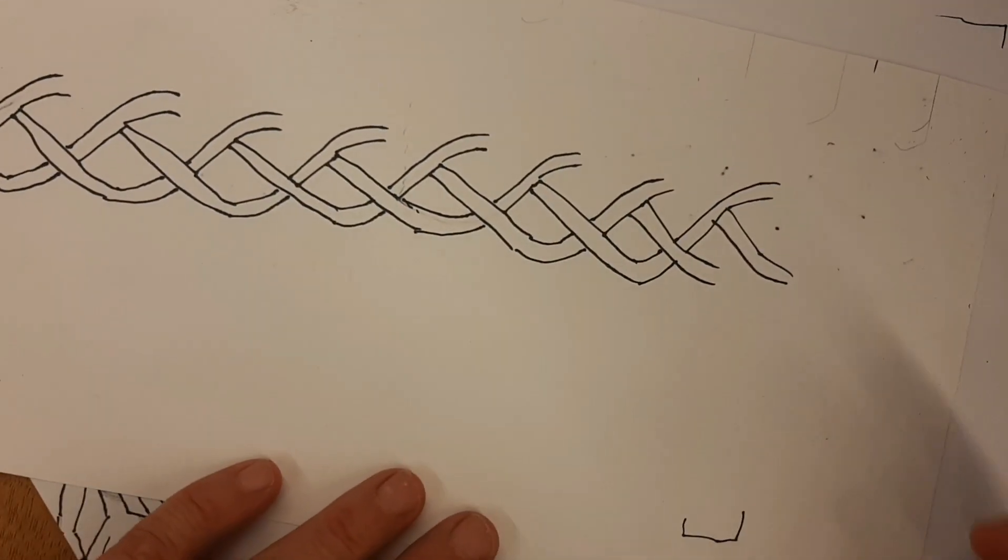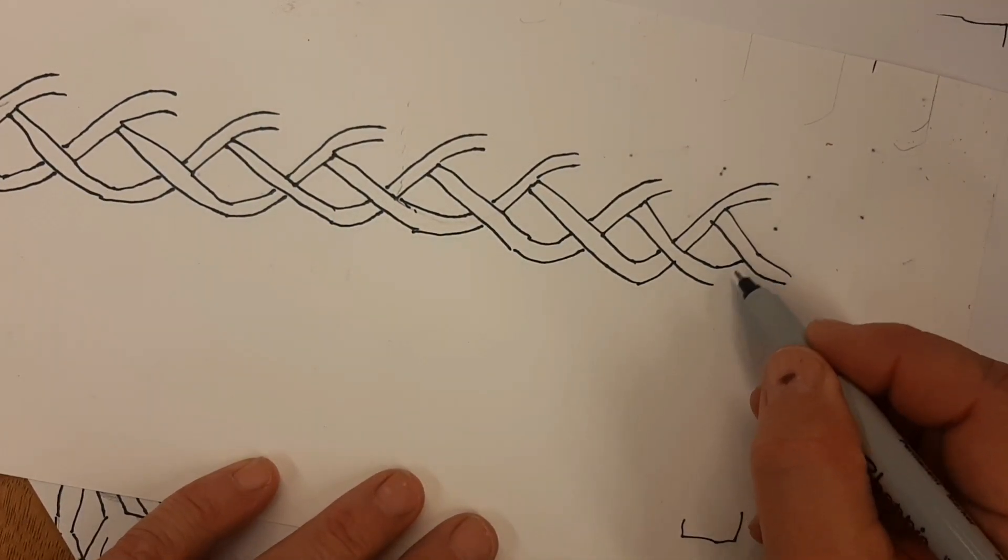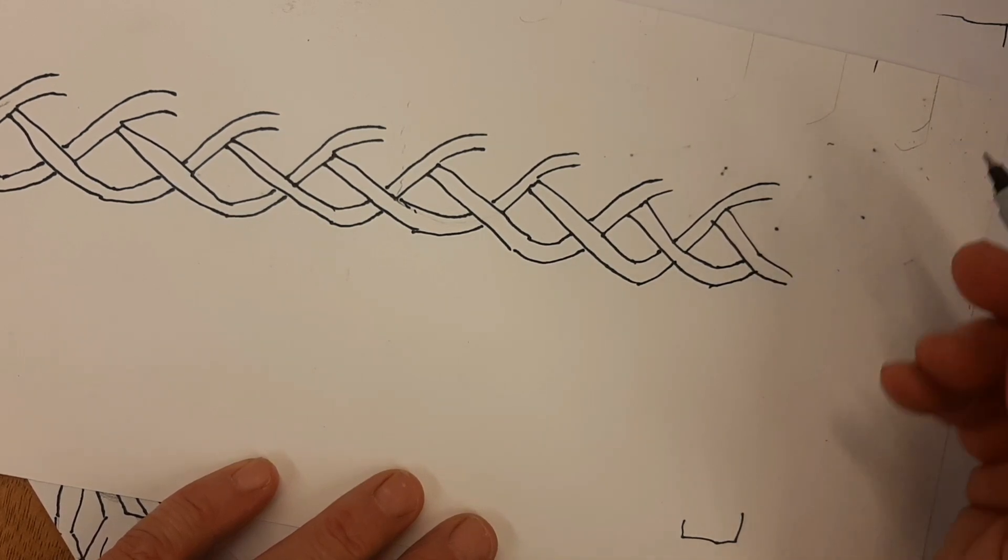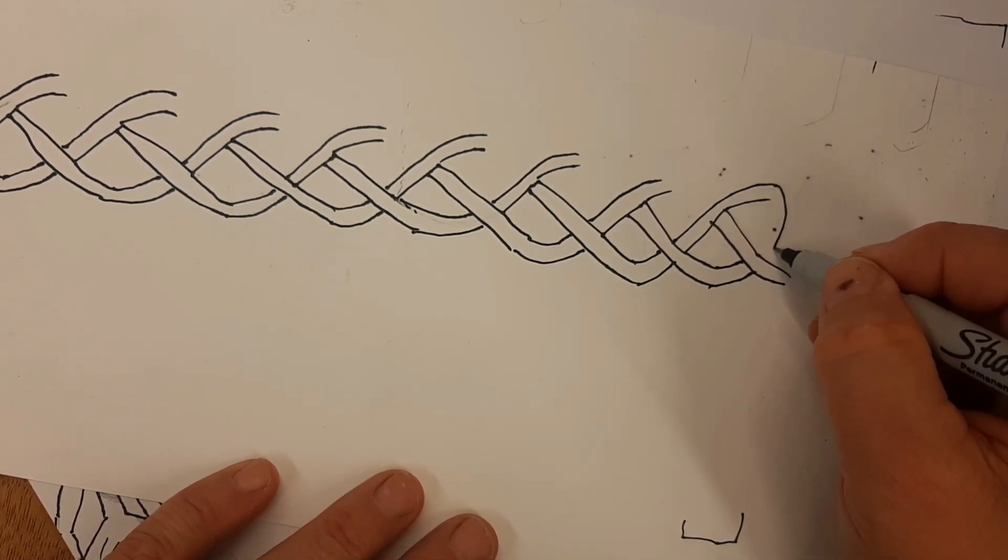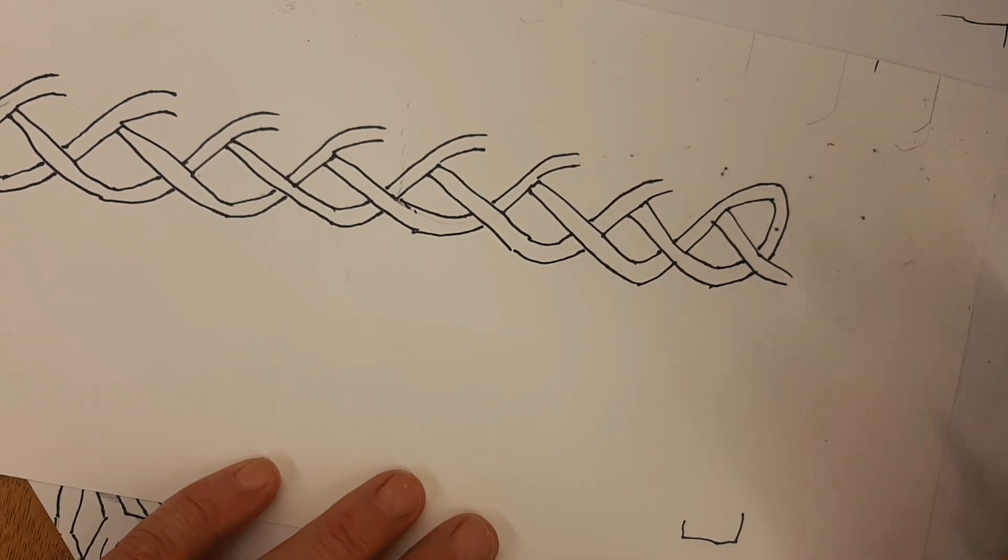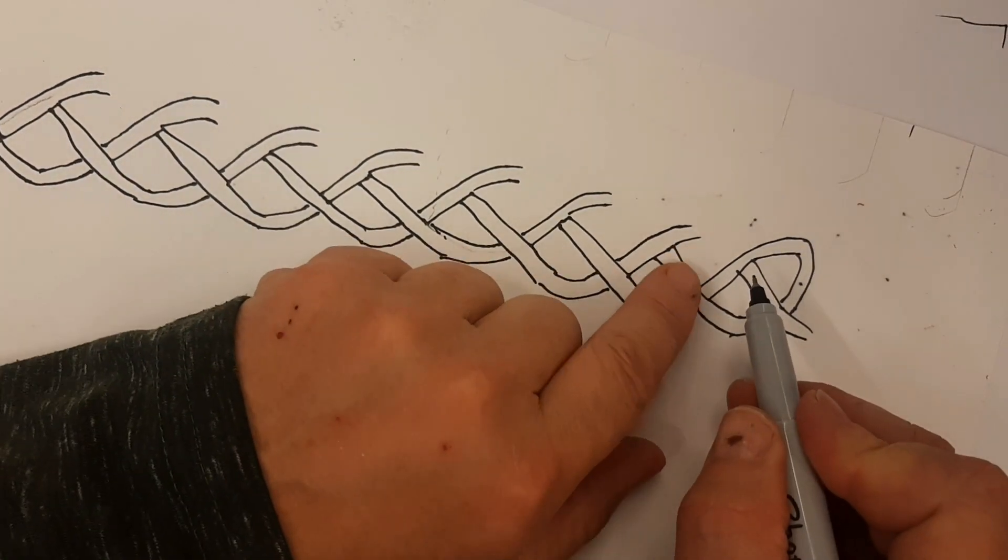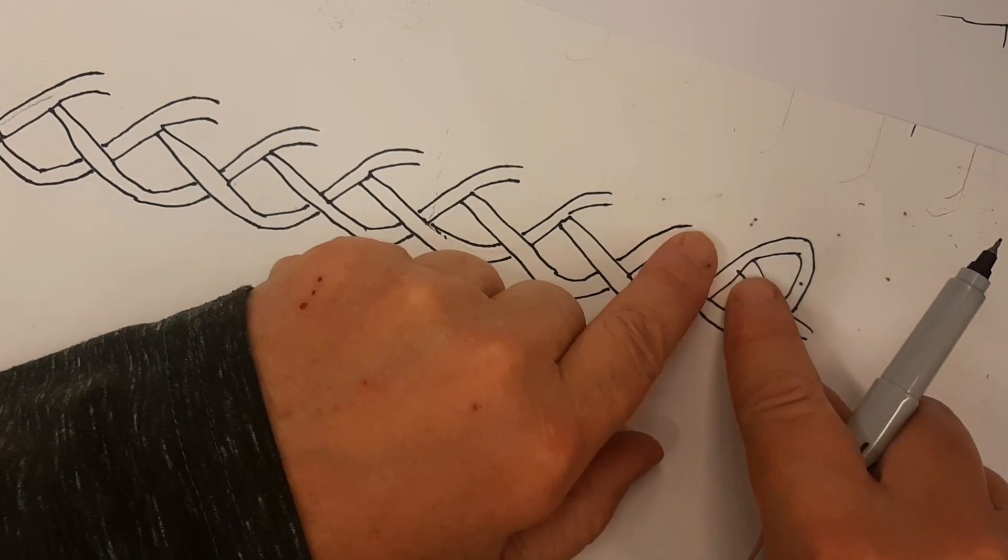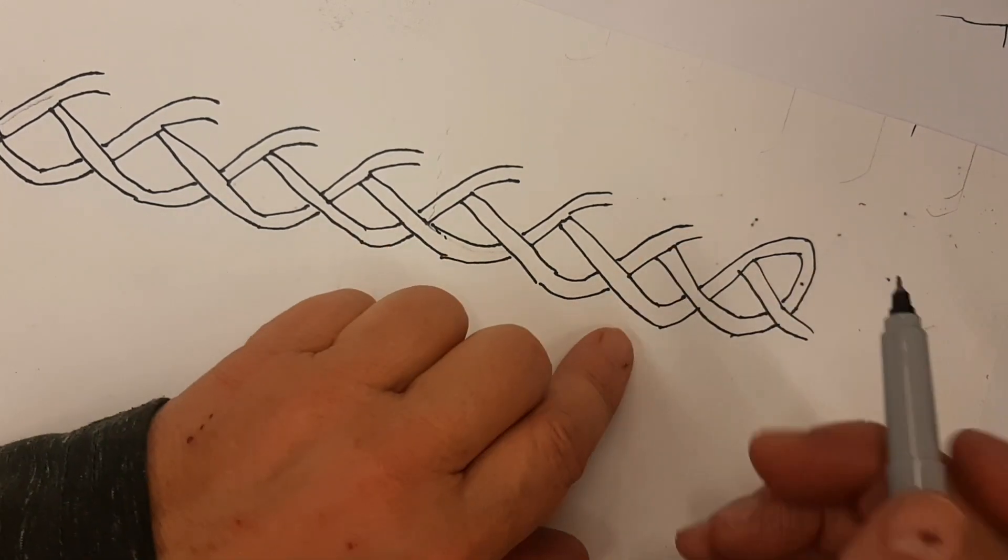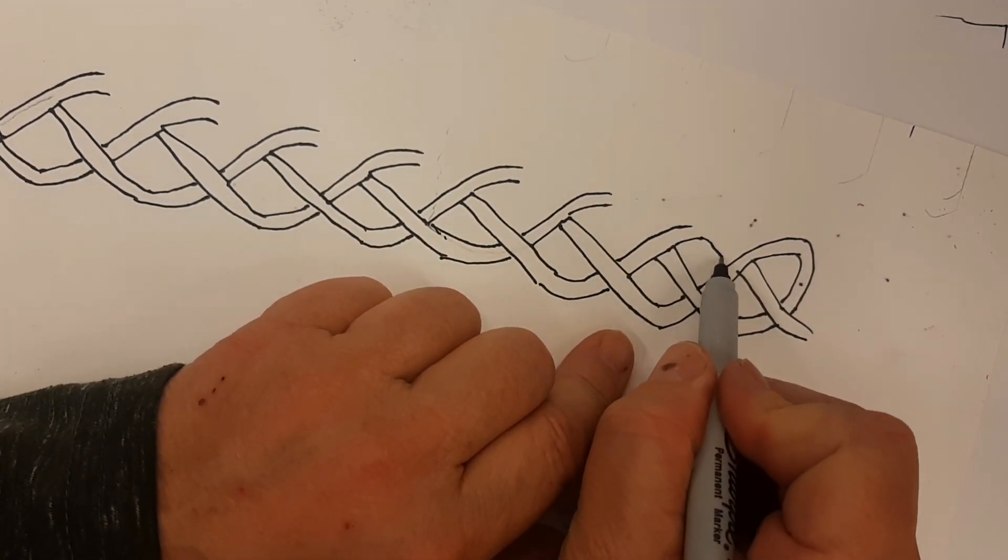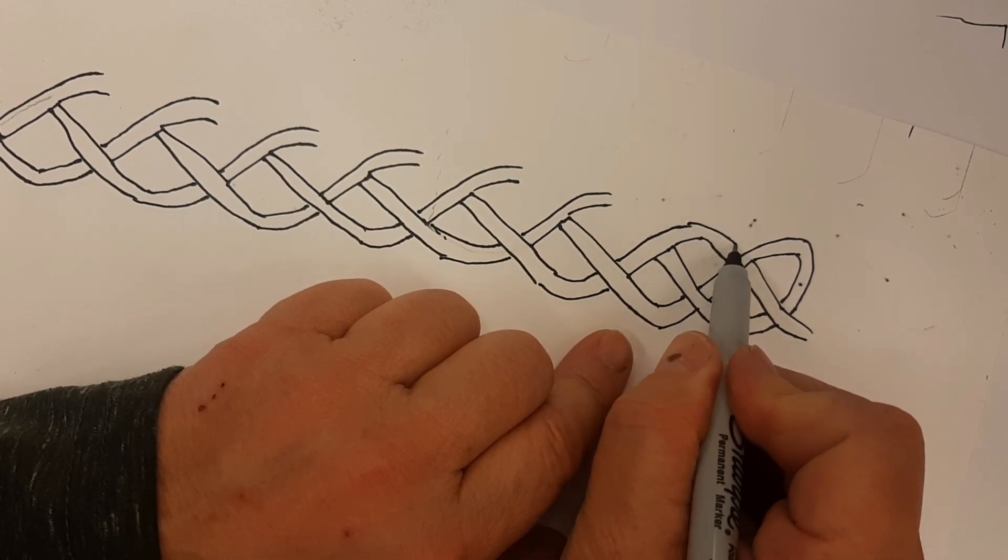And then on the last one, I'm just going to, he doesn't have a friend, but I can make him a friend by bringing him down here. Ta-da! And then I need to connect this to this. But I do not want to cross a line. Never cross a line. Always stop short of the line.